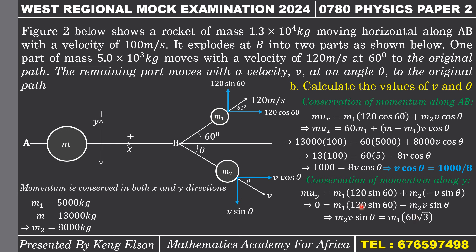Since sin 60 = √3/2, we get 120 × √3/2 = 60√3. Dividing both sides by m2, and noting that m1/m2 = 5,000/8,000 = 5/8, we get v sin theta = (5/8) × 60√3 = 300√3 / 8. This is Equation 2.